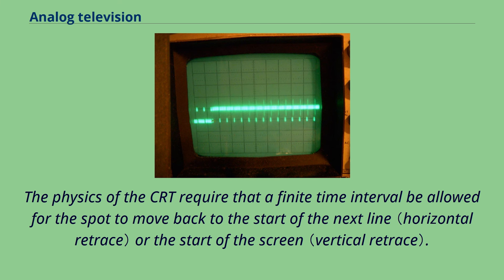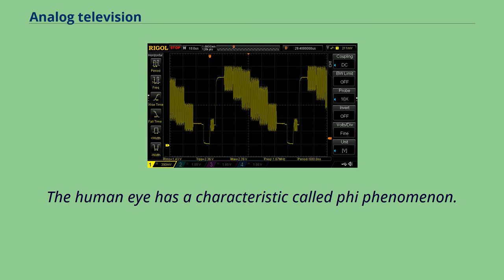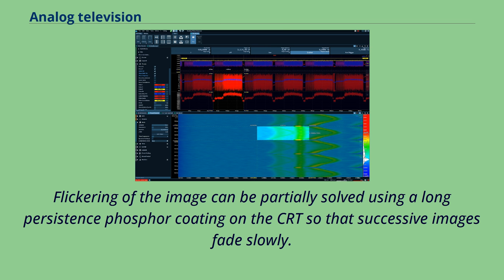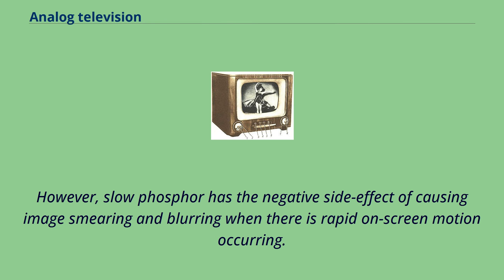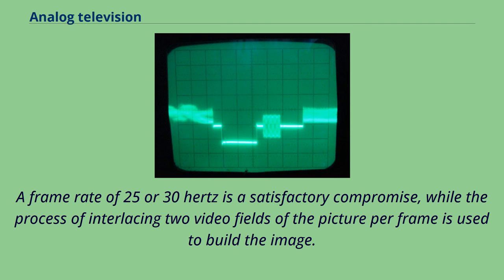The human eye has a characteristic called phi phenomenon. Quickly displaying successive scan images creates the illusion of smooth motion. Flickering of the image can be partially solved using a long persistence phosphor coating on the CRT so that successive images fade slowly. However, slow phosphor has the negative side effect of causing image smearing and blurring when there is rapid on-screen motion occurring. A frame rate of 25 or 30 Hz is a satisfactory compromise, while the process of interlacing two video fields of the picture per frame is used to build the image. This process doubles the apparent number of video frames per second and further reduces flicker.